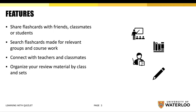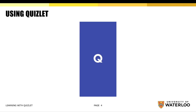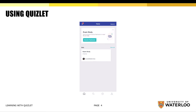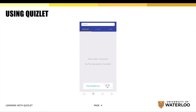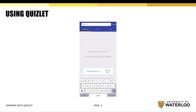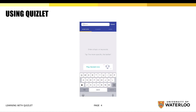Let's check out how to use the app. Opening the app, there is the homepage and the search bar at the bottom. At the search bar, you can search up sets that you've already made or sets that have been made for a specific topic or course.